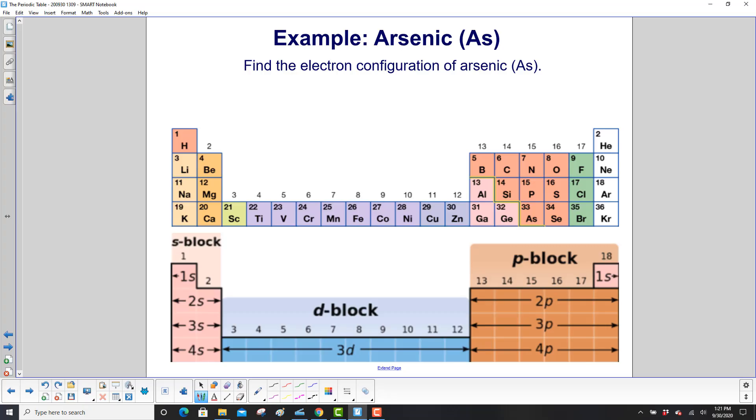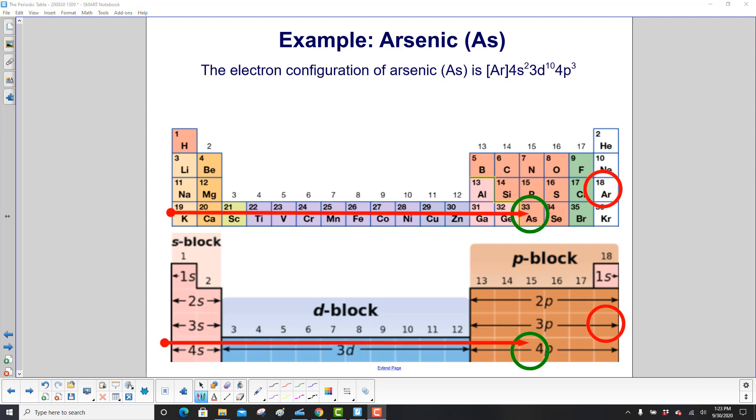Next, find the electron configuration of arsenic, right over here. So first we find the noble gas in the period above arsenic. So arsenic is here. The period above, here's argon. So we put argon in brackets.